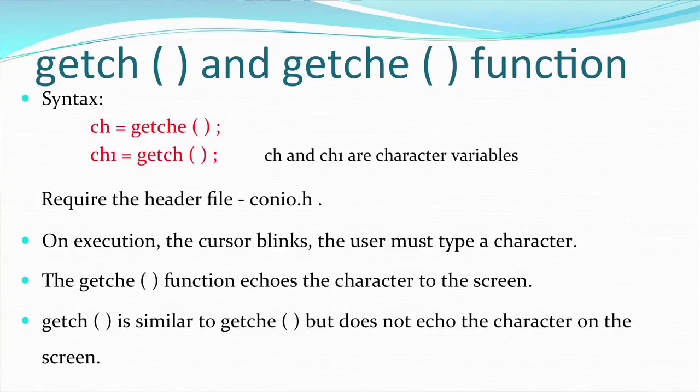puts() is used to display multiple characters or strings on the monitor. It is equivalent to cout and can also display characters including white spaces and new lines.